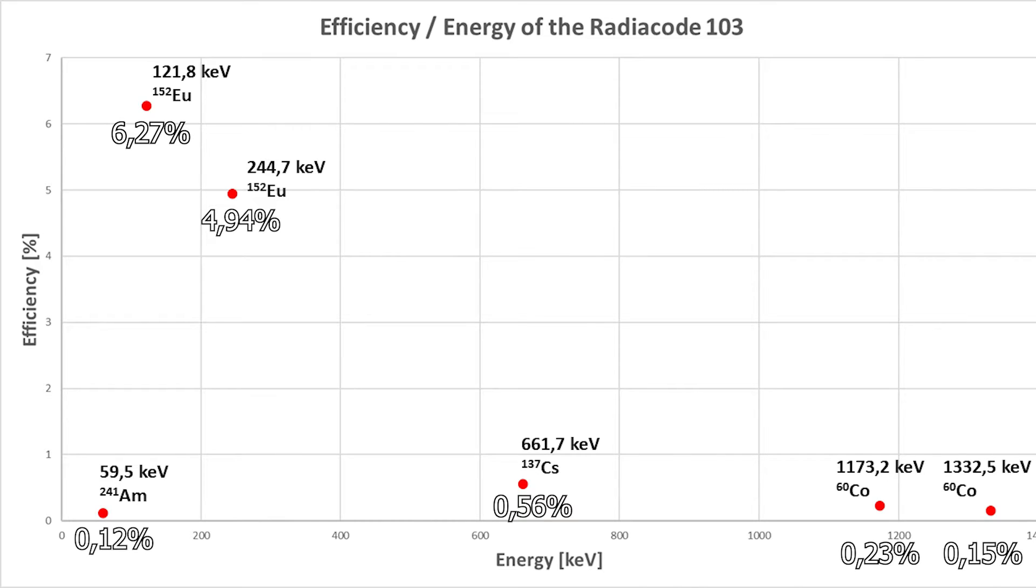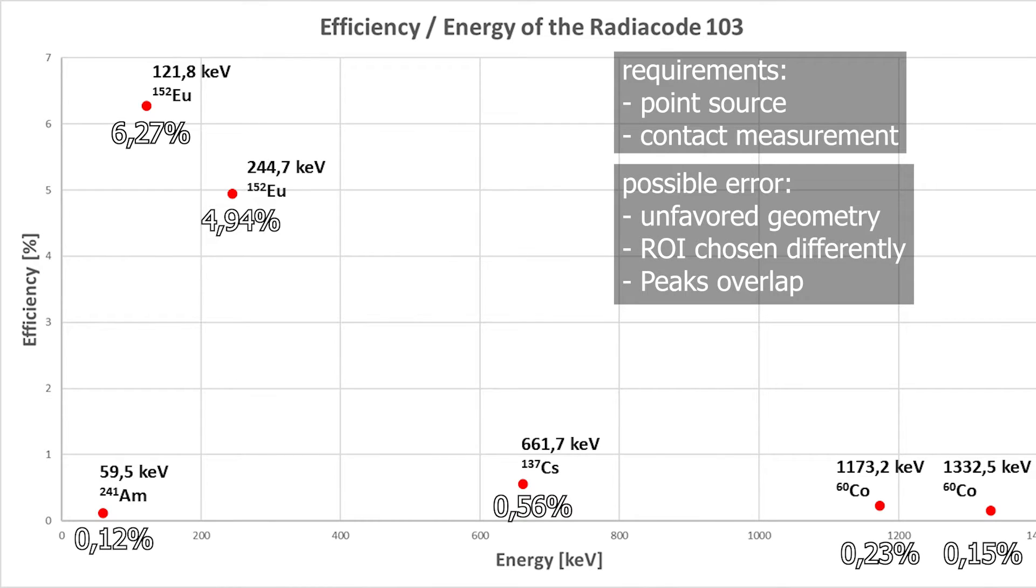With these efficiencies of our standardized radionuclides, you could now calculate how much Cesium-137 you got in your sample. But it has to be a point source and it has to be measured on contact. However, depending on the geometry, these values could differ. And if someone else used my data, the efficiencies could vary based on a different region of interest. And different peaks could also overlap, screwing with the results. And the curve could also look a bit different in lower energy range. Something like this. Just to keep in mind. This is not the be all and end all. It's just a nice reference.